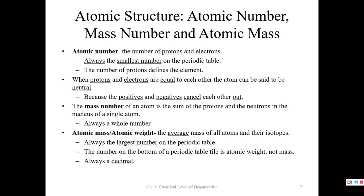The tile on the periodic table will always have the smallest number as the atomic number — it defines the element as the number of protons, but it also is the number of electrons. When protons and electrons are equal, the positives and negatives cancel out, meaning the charge is zero. The atom has a charge of zero — all atoms on the periodic table are actually neutral, all with a charge of zero.